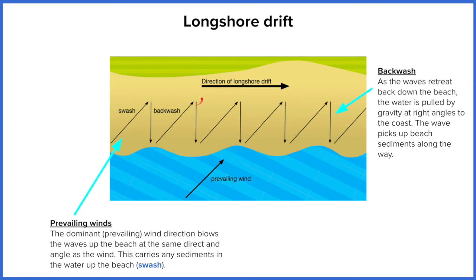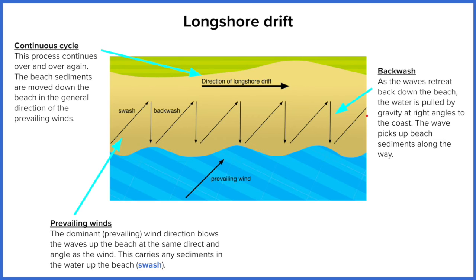Any material that's picked up by the wave — which is called the backwash when it moves back into the sea — is going to get dragged back down into the sea. That process continues in a zigzag pattern all the way down the coast. It's a continuous cycle and it goes in the direction of longshore drift, which is influenced again by the prevailing wind direction.